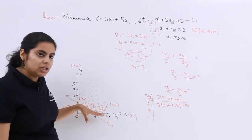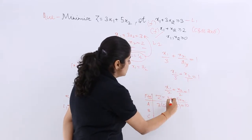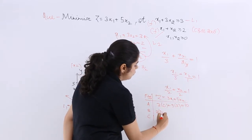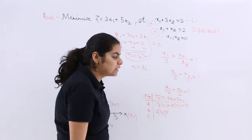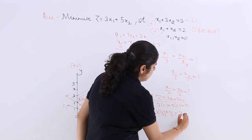Again, what is B? B is three-halves and one-half. So 3 times three-halves plus 5 times one-half. So 9, 5, 14 upon 2 is 7.